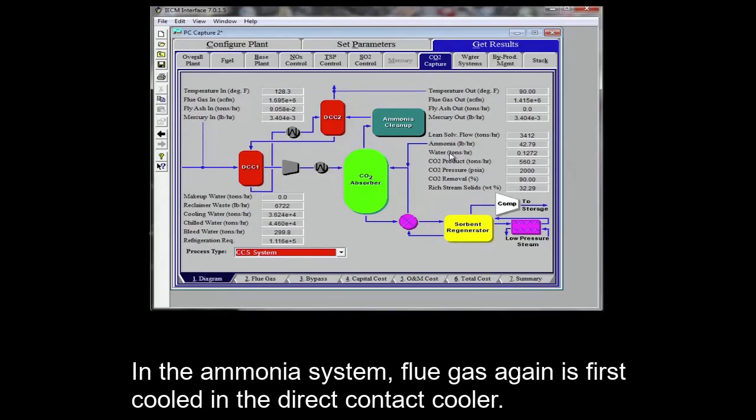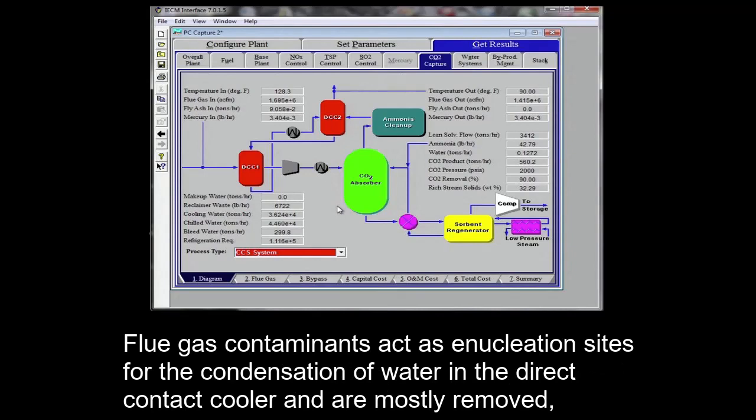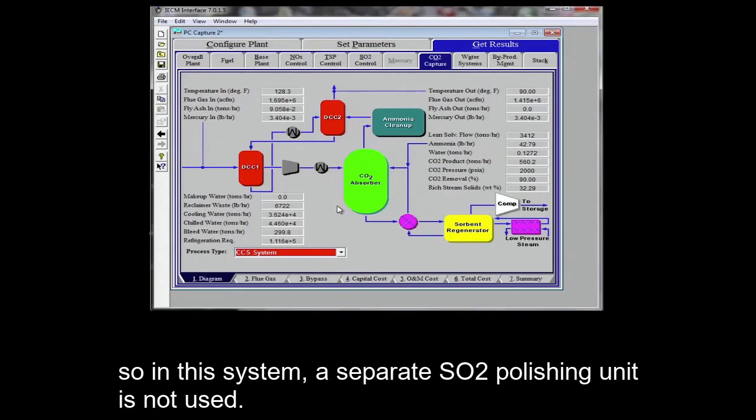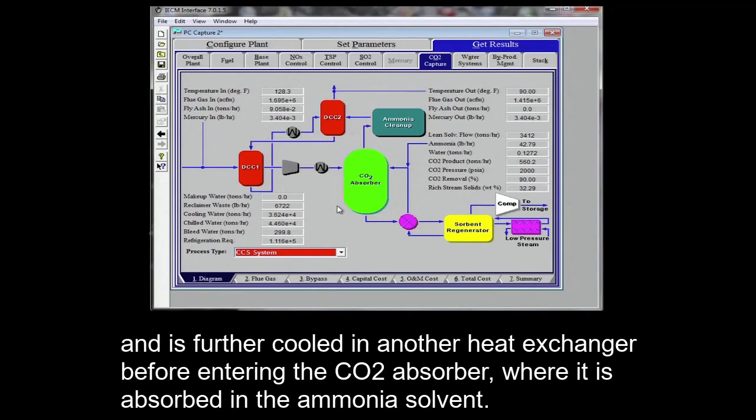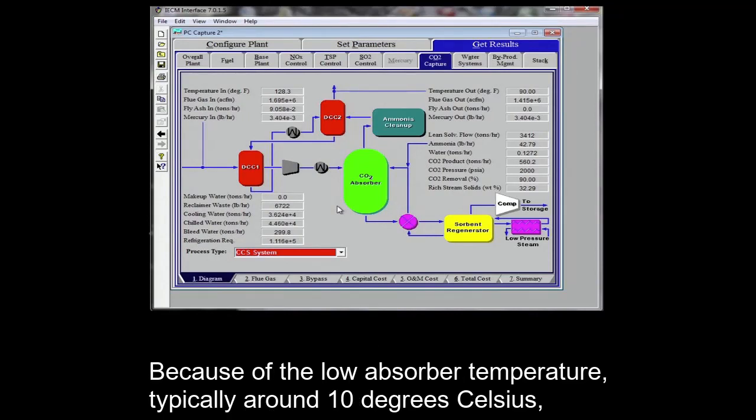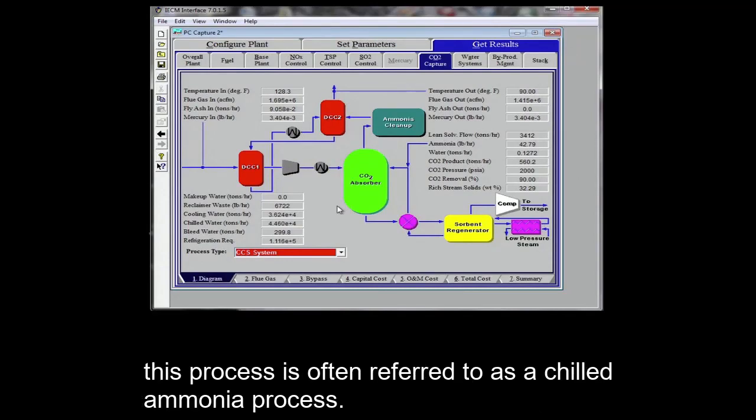In the ammonia system, flue gas again is first cooled in the direct contact cooler. Flue gas contaminants act as a nucleation sites for the condensation of water in the direct contact cooler and are mostly removed, so in this system a separate SO2 polishing unit is not used. The flue gas is then compressed to overcome the pressure drop of the system and is further cooled in another heat exchanger before entering the CO2 absorber where it is absorbed in the ammonia solvent.